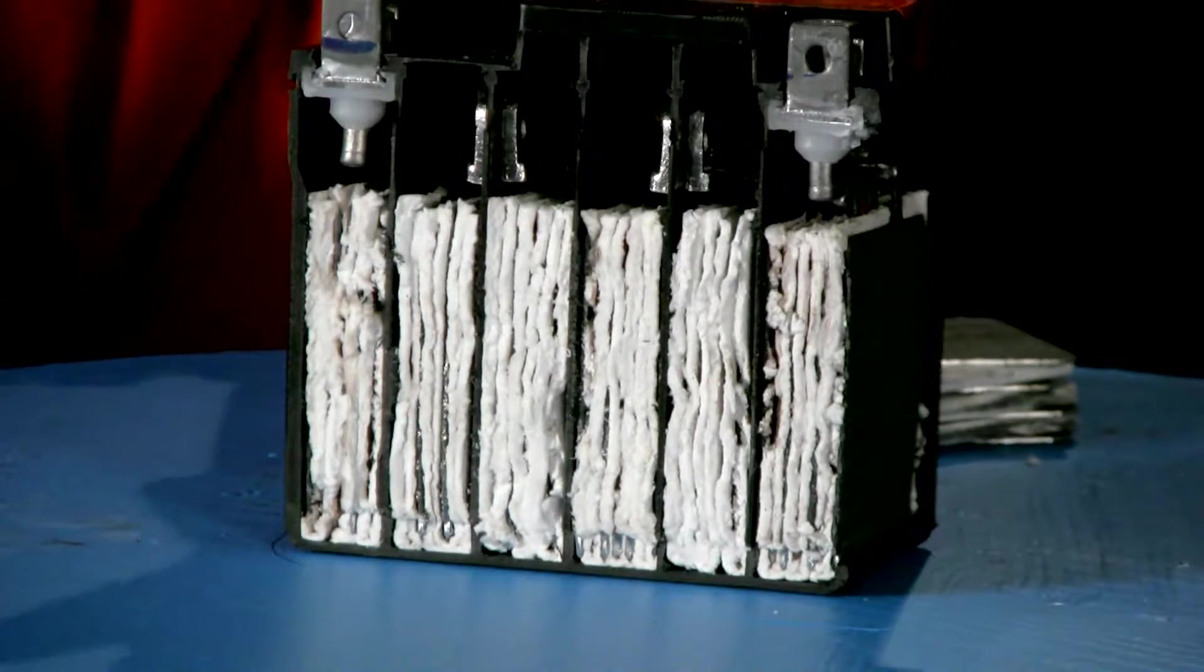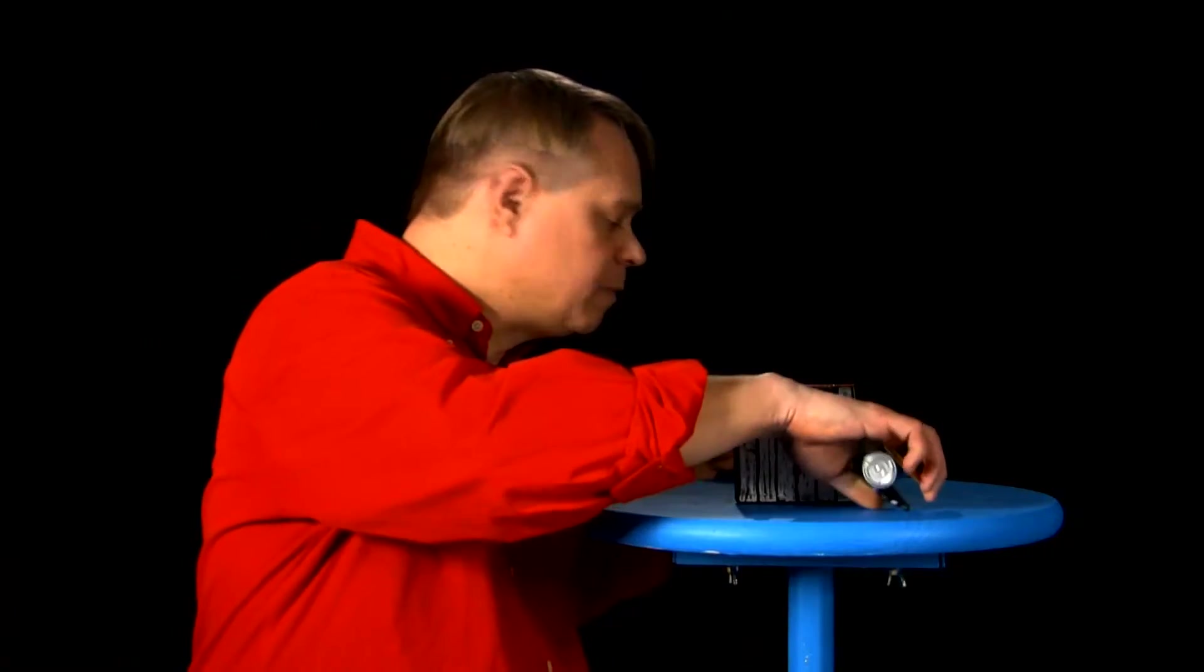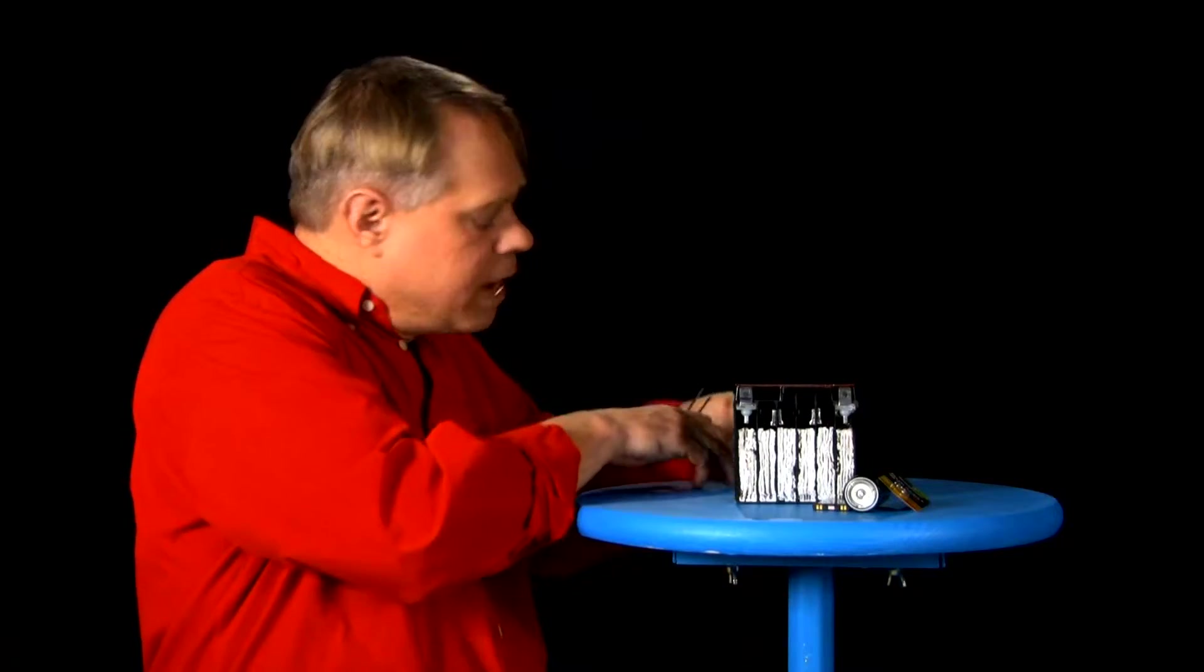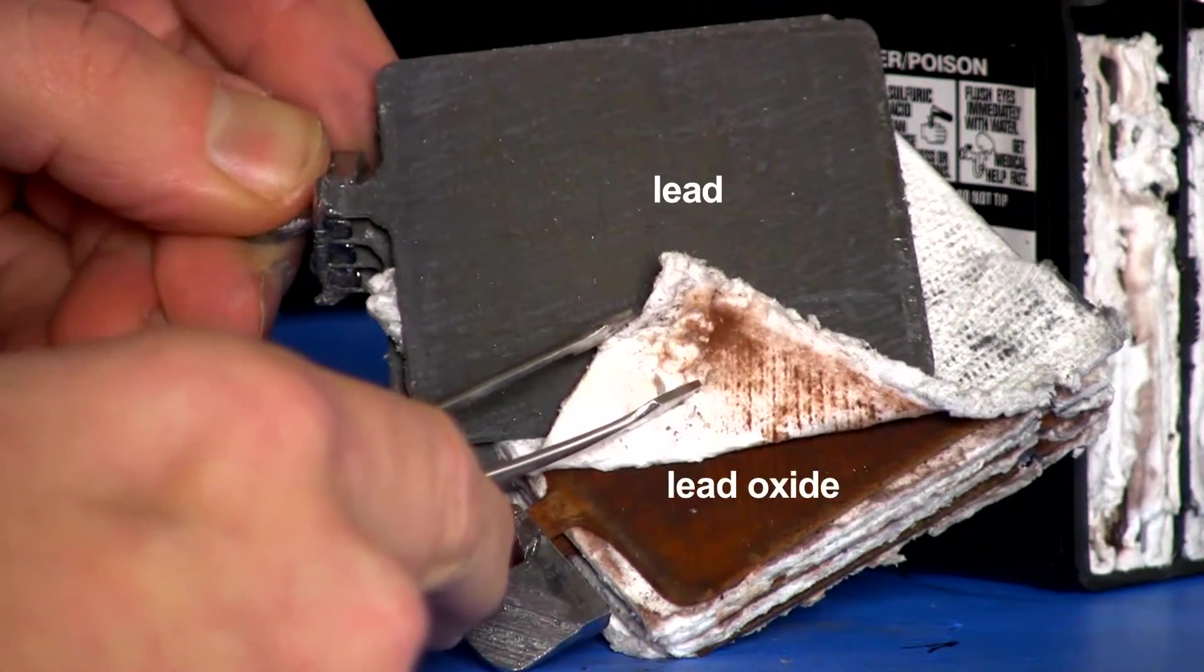The first thing to note about this motorcycle battery is that it's heavy. That's because it's tightly packed with lead and lead oxide sheets, both of which are very dense. This is a cell from an identical battery, and you can see the lead, and underneath this, the lead oxide. They alternate throughout the interior.